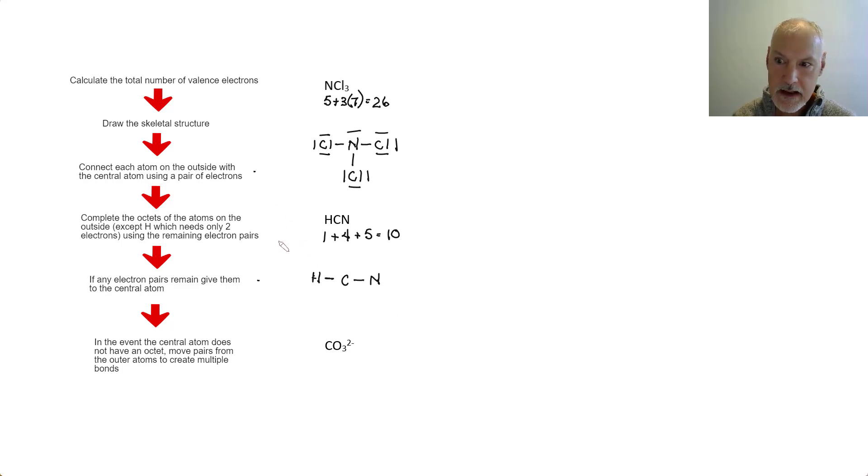And so this step. Now complete the octets of the atoms on the outside. So I'll do that. There aren't any remaining pairs. So I don't have this step to follow. Go to the last one. In the event a central atom does not have an octet, move some pairs. So carbon right now only has four electrons. It needs two more pairs. So I'm going to move two.